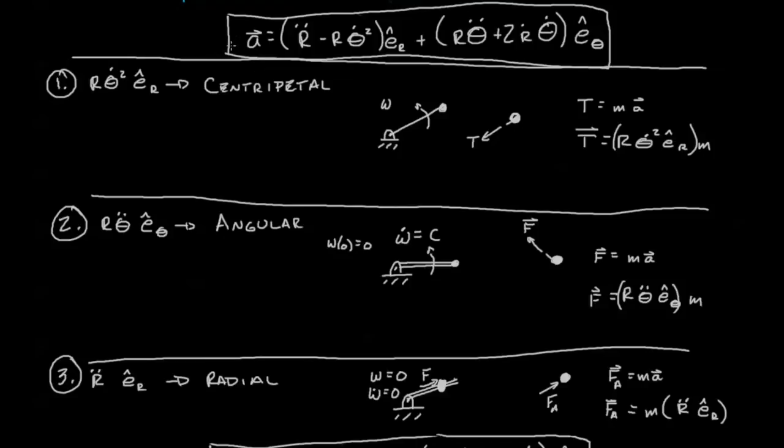Previously we had looked at the acceleration and seen that it has a radial component and an angular component in polar coordinates.